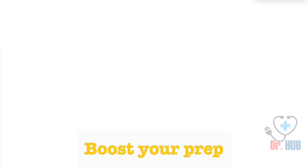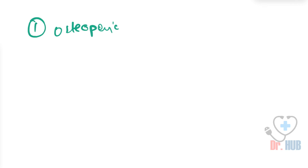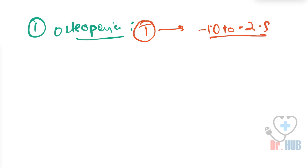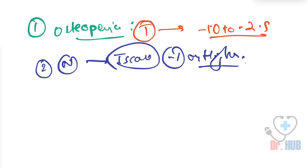Now answering our two questions. First, in the case of osteopenia, the T-score is between minus 1 and minus 2.5. Second, a normal T-score is minus 1 or higher.